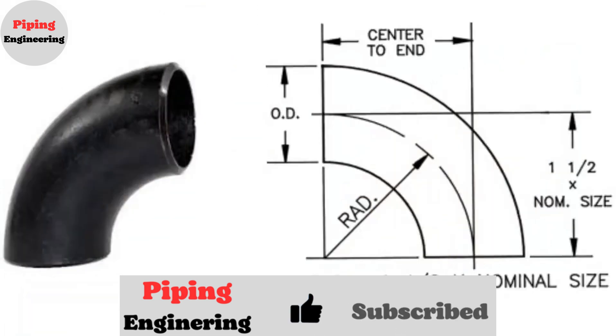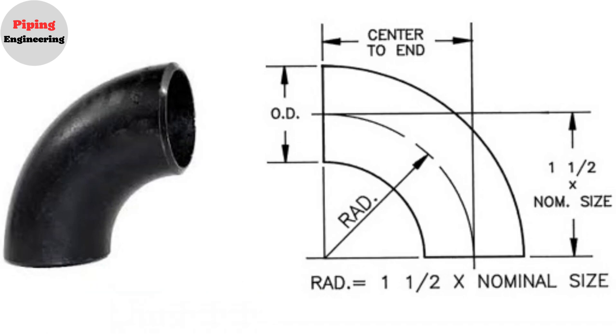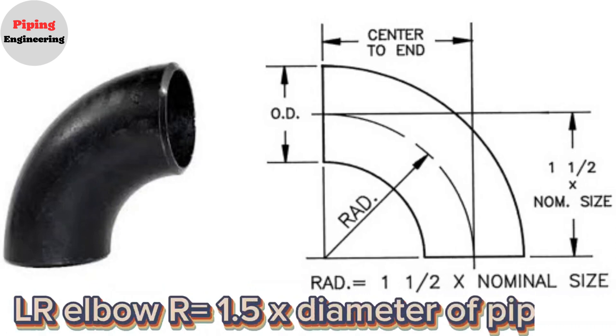Long radius elbows 1.5 times D is having the radius equivalent to 1.5 times the diameter of the pipe. So LR elbow radius equals 1.5 times diameter of pipe.